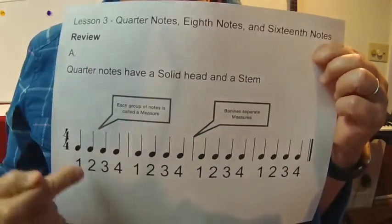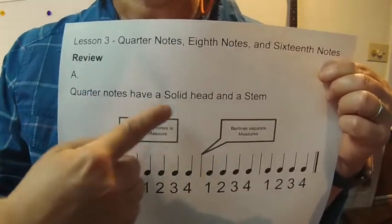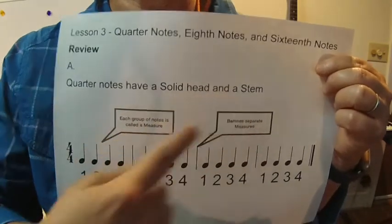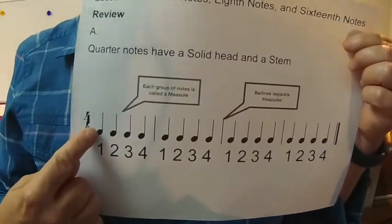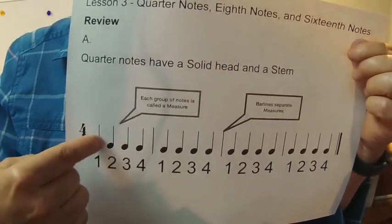We're going to start with a review of the quarter notes. Quarter notes have a solid head and a stem. That means they have a solid oval, that's the head, and they have a stem, that's that line right there.